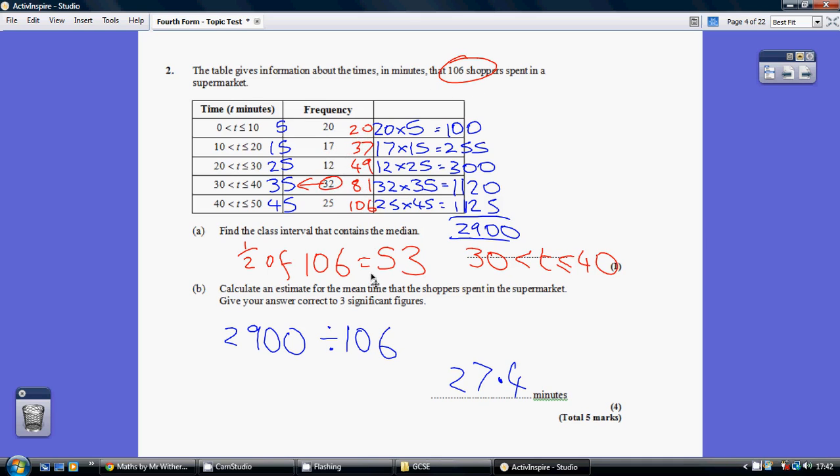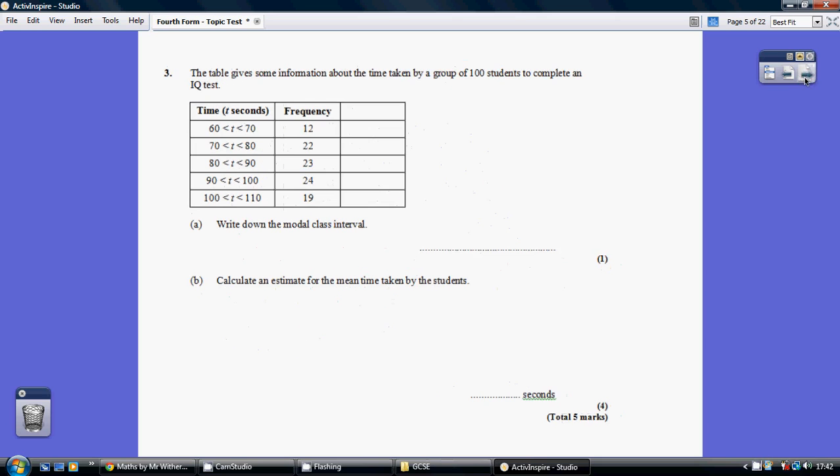We're looking to where our 53rd shopper is. Well, he's not quite in this row. That's only covered 49 of our shoppers. So, our 53rd shopper is early on amongst these 32. So, how long did that 53rd shopper spend in the shop? Well, it's between 30 and 40 minutes. So, you just copy out this bit here as your final answer.